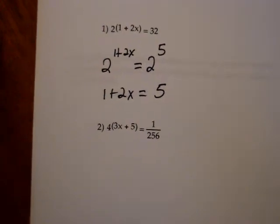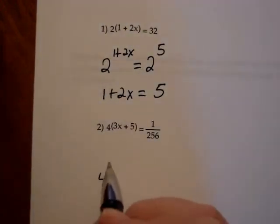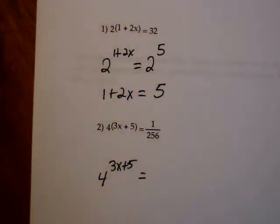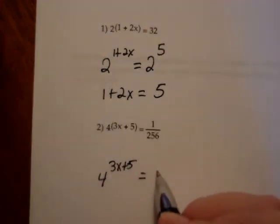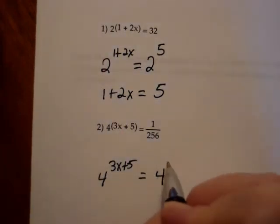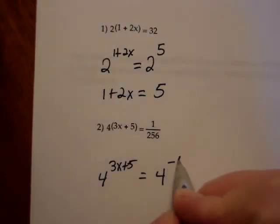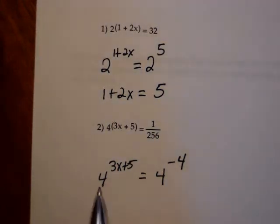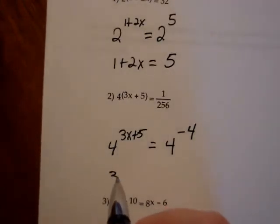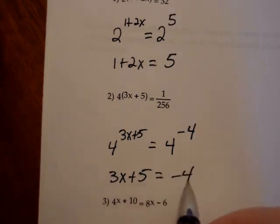Number 2: 4 raised to the 3x plus 5 power is on the left-hand side, and on the right-hand side I have 1 over 256. My goal is to rewrite 1 over 256 as 4 to some power. The power is negative — 4 to the 4th is 256, so this becomes 4 to the negative 4th. Once the bases are equal, I equate the exponents, and again I just have a linear equation to solve.